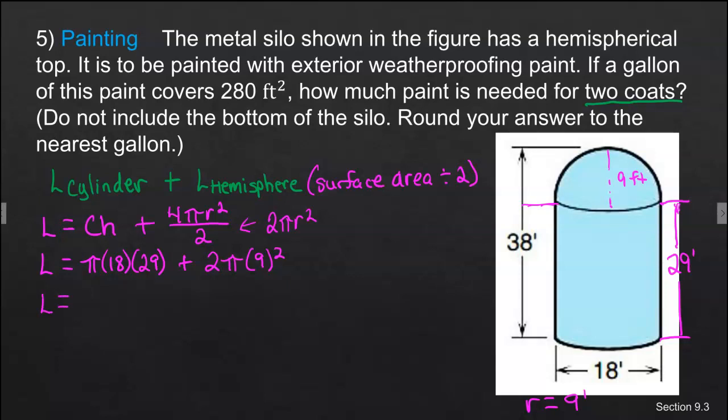This is 522π plus 162π. That's just multiplying the numbers that are there with the π. On this one, that would be 2 times 81. And then this is 18 times 29 is the 522. This helps you with rounding. So if I add these two together, kind of like like terms, I get 684π. And I'm going to multiply that by 2 because I need 2 coats. So my lateral surface area is going to be about 4,297.699 square feet.